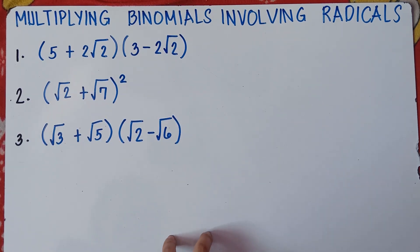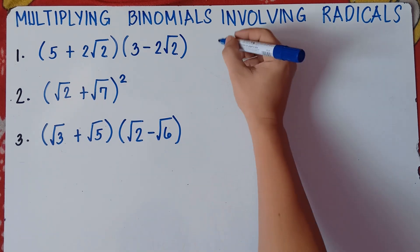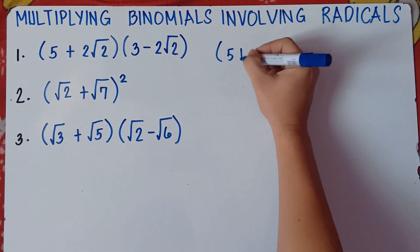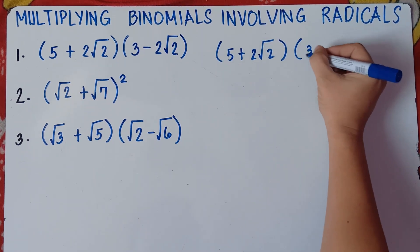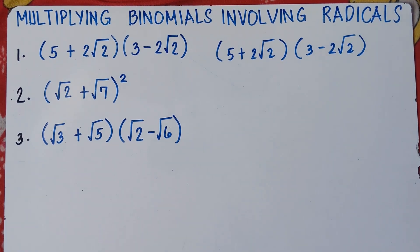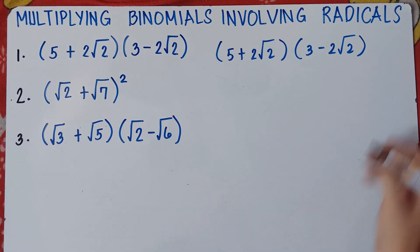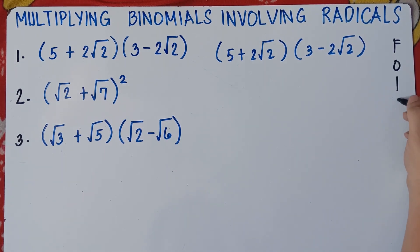We have three examples for you to really understand how to multiply. Let's start with number one. We have the quantity 5 plus 2 square root of 2, multiplied by 3 minus 2 square root of 2. In multiplying binomials involving radicals, you need to use the FOIL method. F for First, O for Outer, I for Inner, and L for Last.